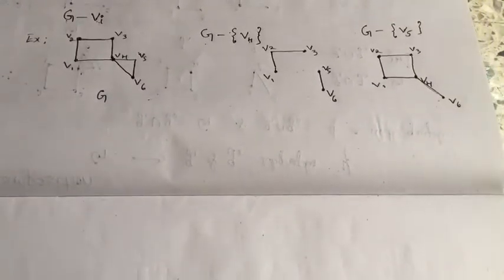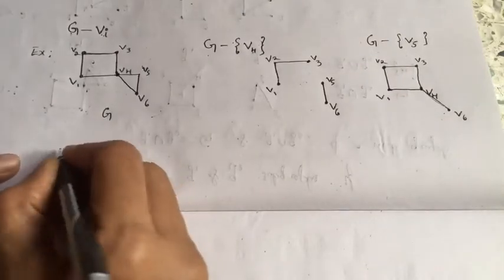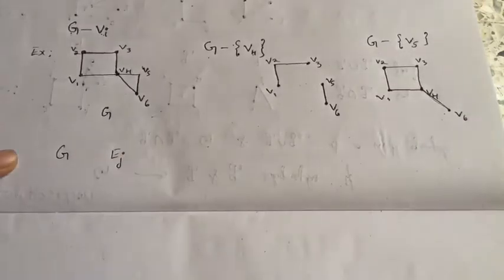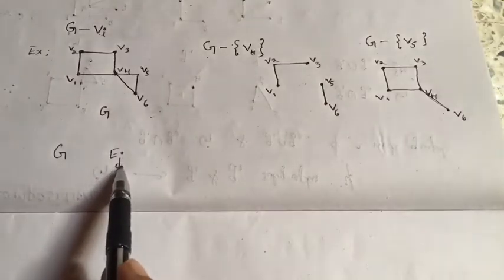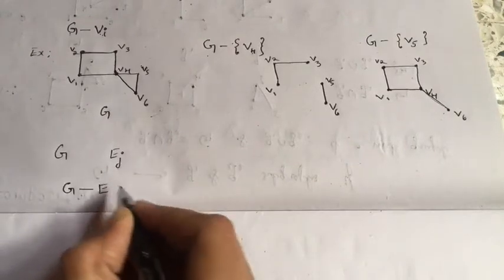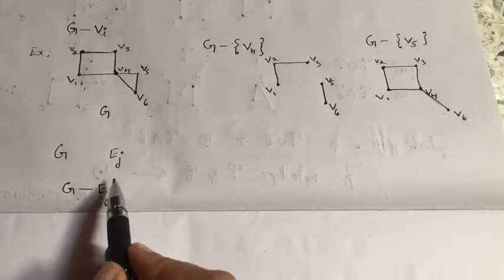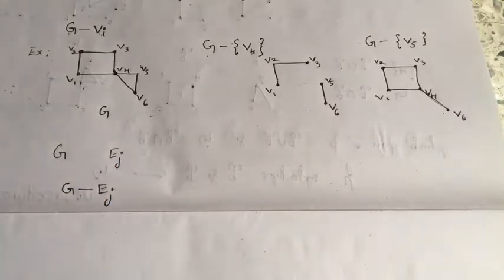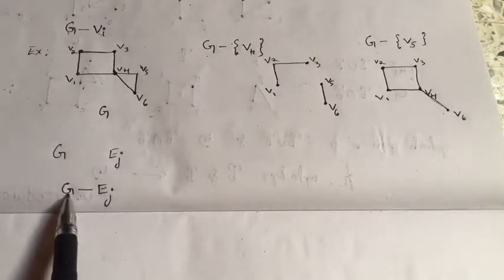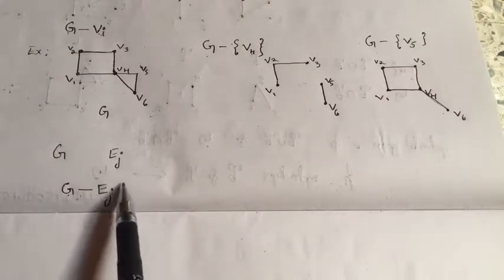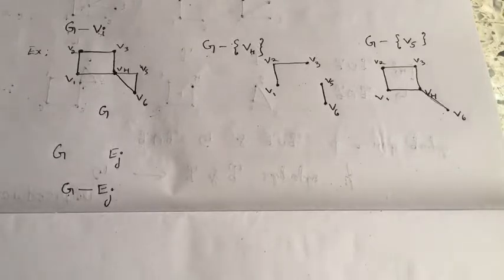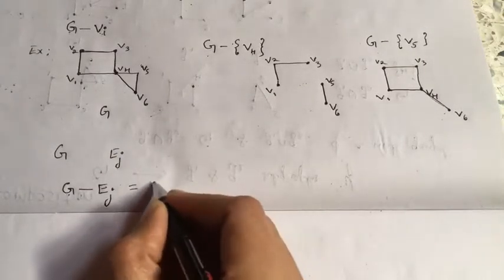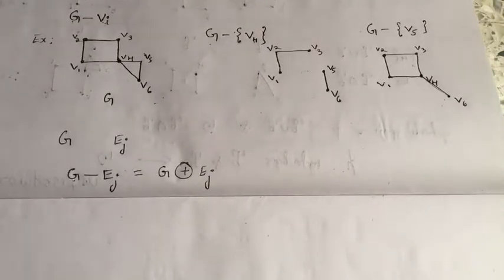Next is deletion of an edge. If ej is any particular edge of graph g, then g minus ej is the subgraph obtained by deleting edge ej from g. Remember: we are not deleting any vertex. In fact, g minus ej is nothing but g ring sum with ej.